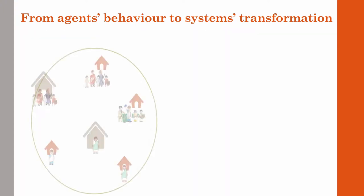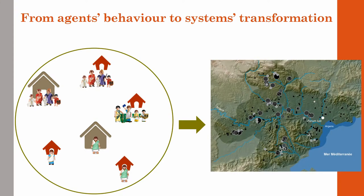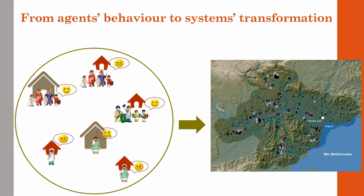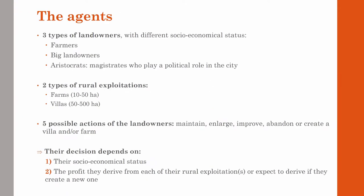Agent-based modeling is particularly well-suited to this goal, as it allows us to explore how interactions between system components at the micro level generate new properties and structure at the macro level. Since the decision to create, abandon, or maintain an exploitation mainly depends on its owner, we chose to simulate the behavior of Gallo-Roman landowners regarding their rural properties. As modeling necessarily imposes simplifications on reality, we only consider three types of landowners with different socio-economic statuses.